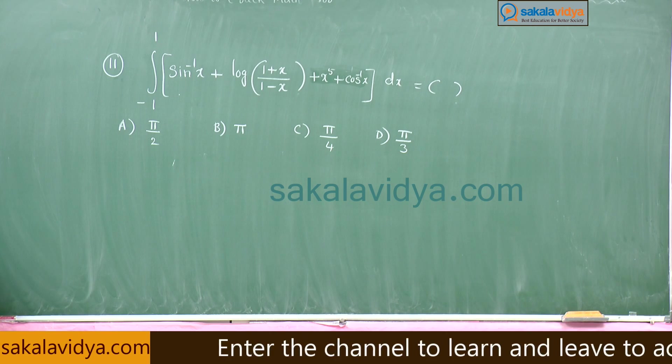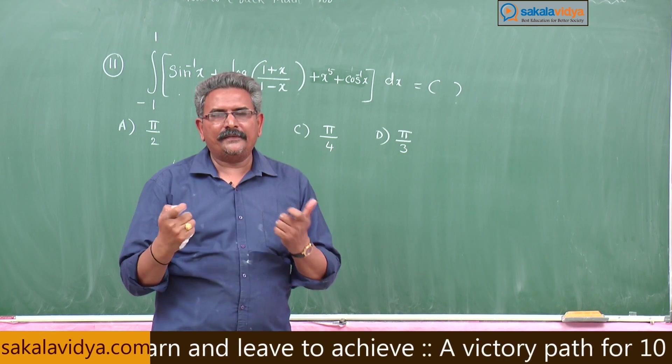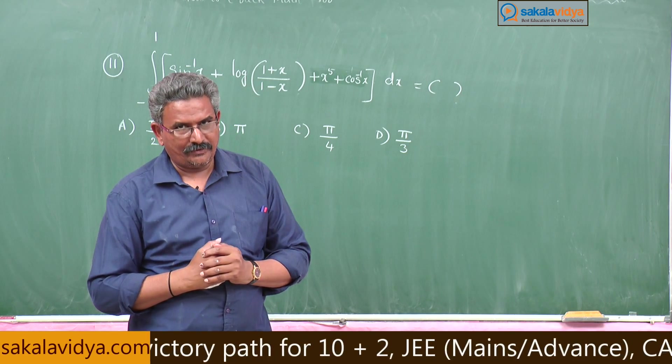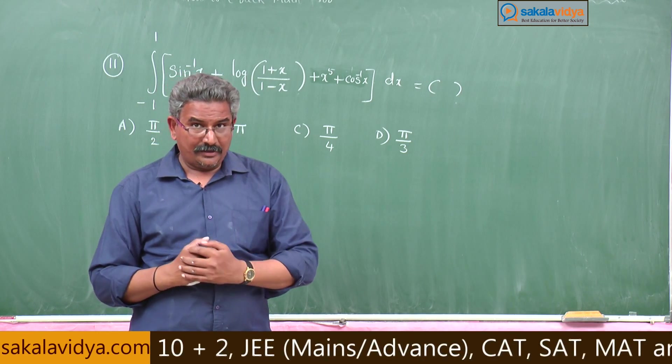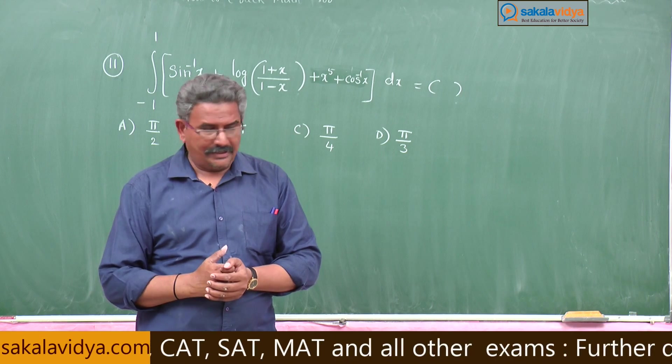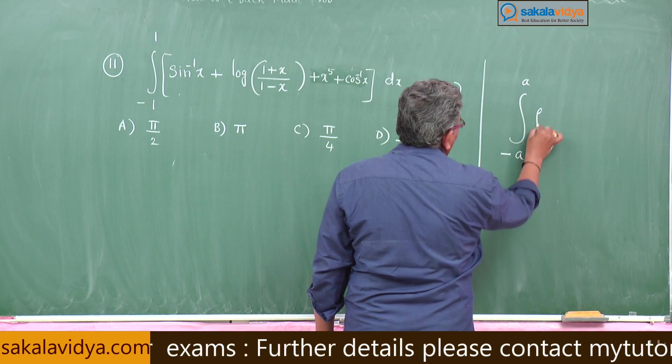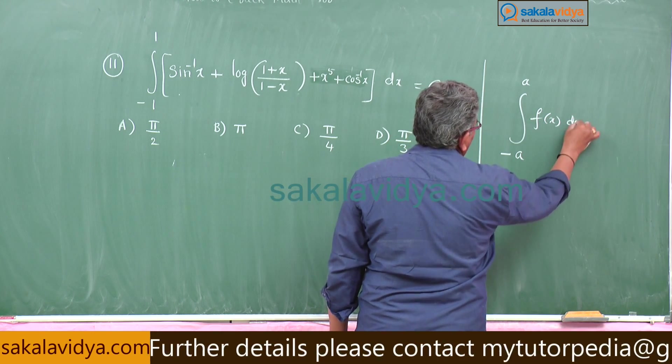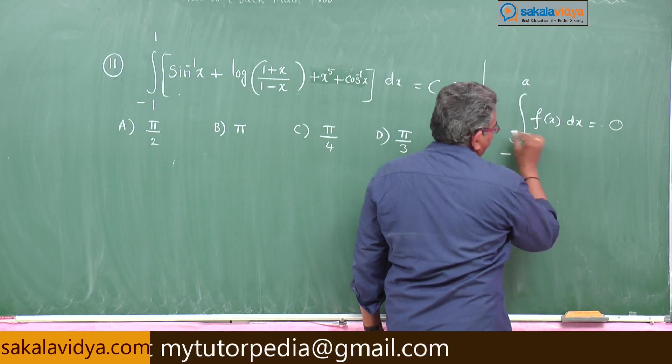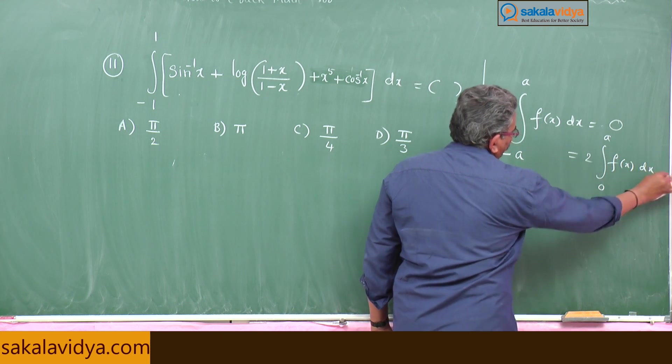Basically when the given problem is integral minus a to a of f(x) dx, you have to test evenness and oddness of the function f(x). If the function is odd, simply you can write 0. If even function, 2 times integral 0 to a f(x) dx.